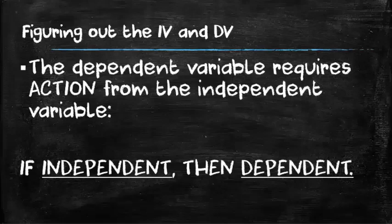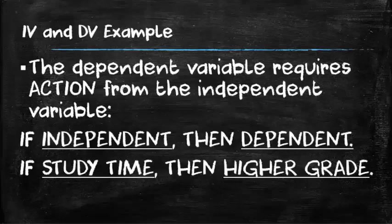In other words, if this is present, then this will happen. So the dependent variable is requiring action from the independent variable. Remember, always the dependent variable requires action from the independent variable. So if this, then that.